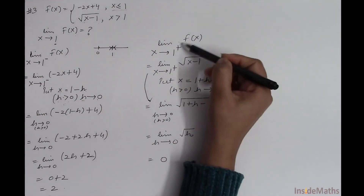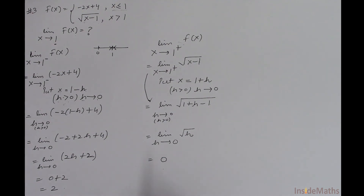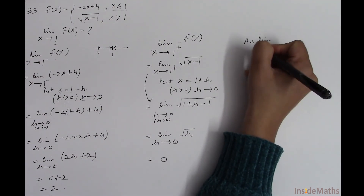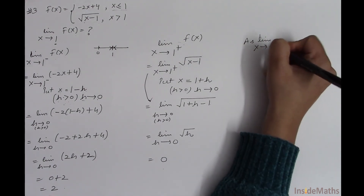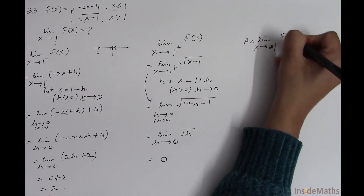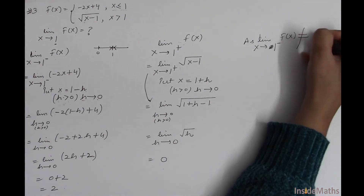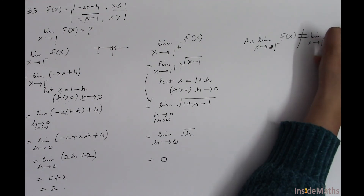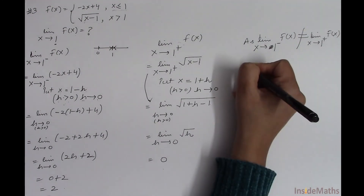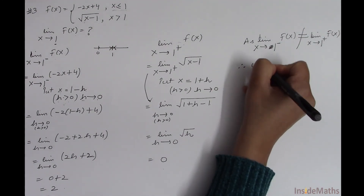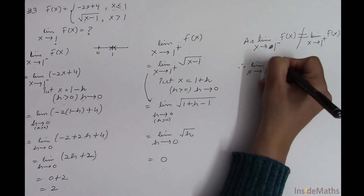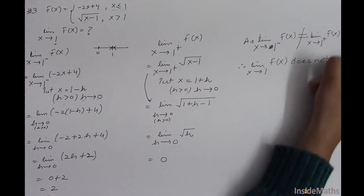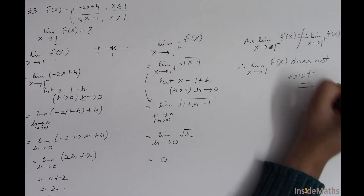The left-sided limit is 2 and the right-sided limit is 0. Since the limit as x approaches 1 from the left of f(x) is not equal to the limit as x approaches 1 from the right of f(x), the limit as x approaches 1 of f(x) does not exist.